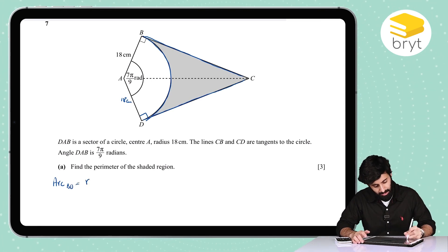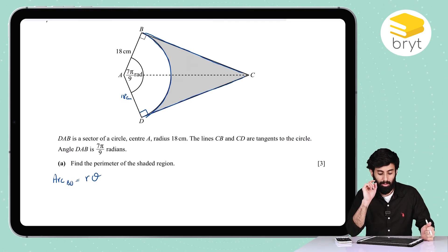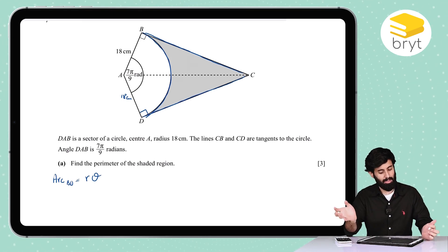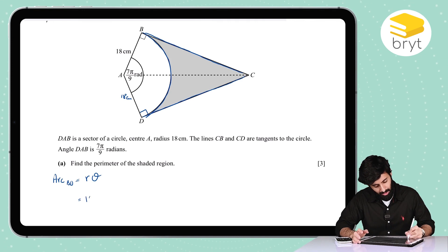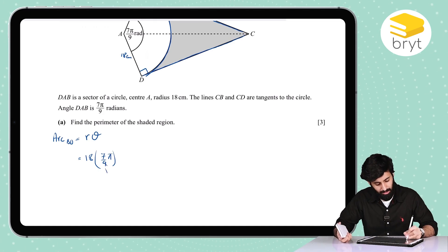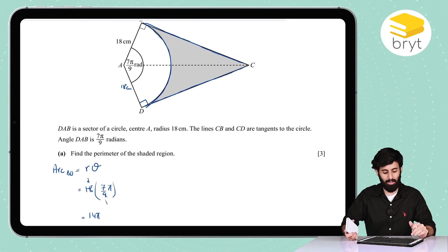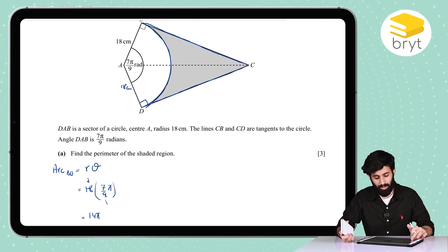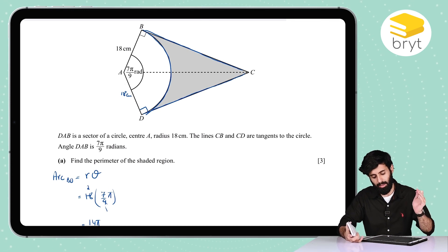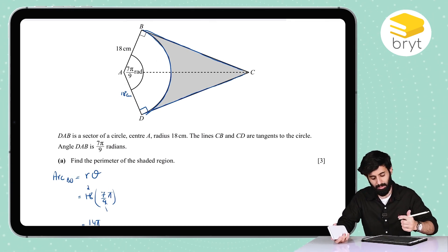How do you find the arc length? Arc length is basically worked out by taking the radius and multiplying it by theta. The radius is 18 and theta is 7π over 9, so we'll just put the two together: 18 multiplied by 7 over 9 π. I can simplify 9 and 18, so 2 times 7 is 14π. So now we have the arc length. We'll leave this in terms of π only for now.